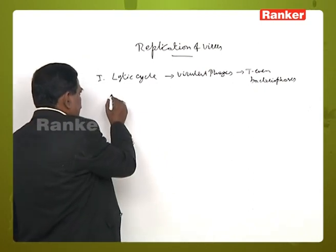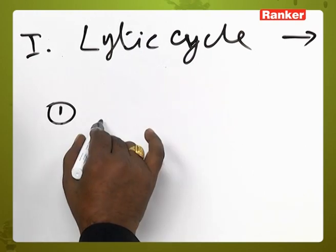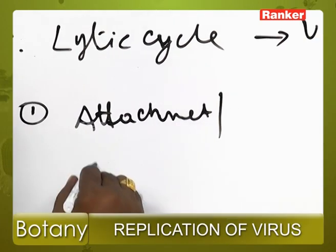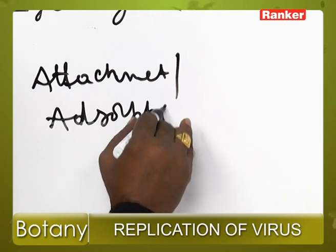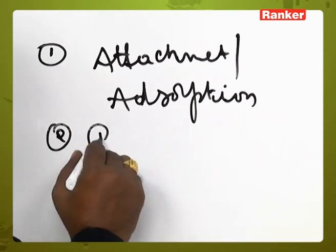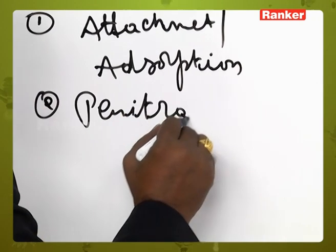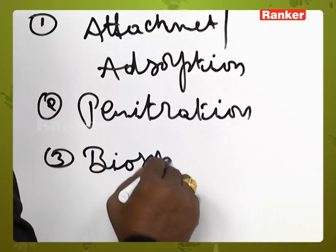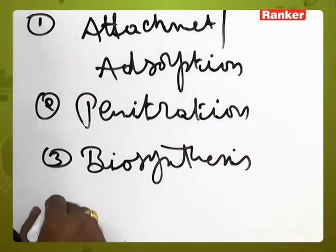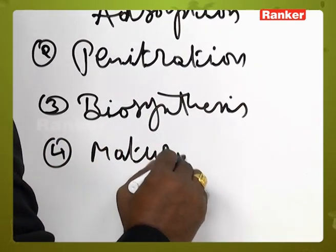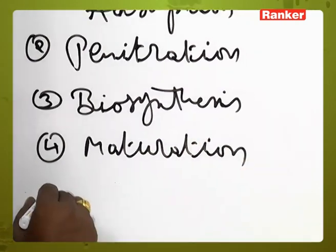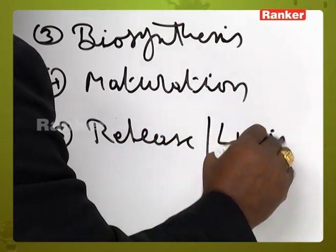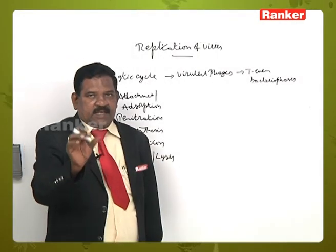The lytic cycle completes in five steps: one, attachment or adsorption; two, penetration; three, biosynthesis; four, maturation; five, release or lysis.